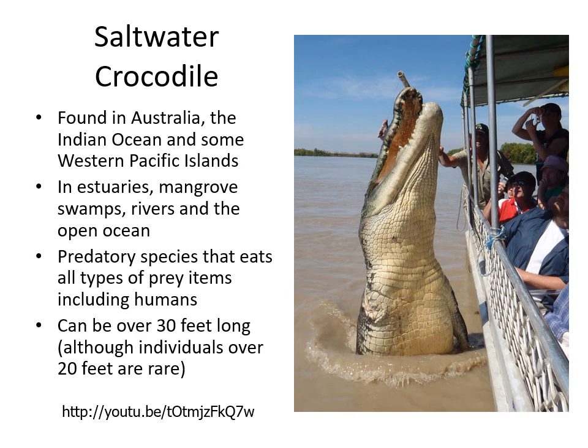You can see this saltwater crocodile is missing an arm — it is a well-known individual that comes up to the boats often to get fed. So they have a kind of agreement: don't eat the people, and we will feed you and take your picture.